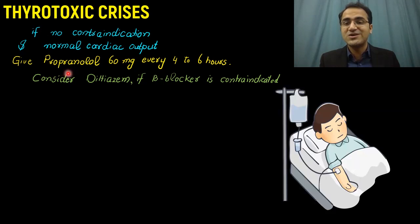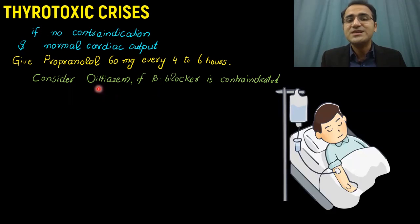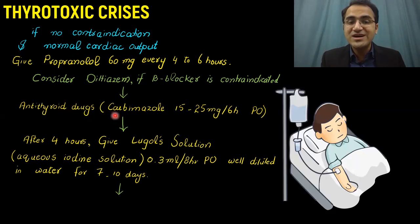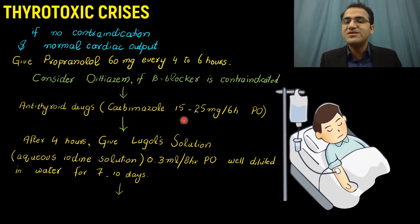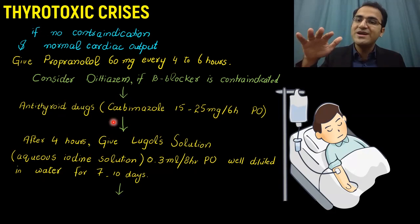If beta blockers are contraindicated — such as in COPD or asthma patients — you can give diltiazem, which is a calcium channel blocker that slows down the heart rate. After that, you can give antithyroid drugs. While propranolol blocks peripheral actions and peripheral activation of thyroid hormone, we also inhibit production of thyroid hormone by giving antithyroid drugs like carbimazole, given 15 to 25 mg every 6 hours orally.